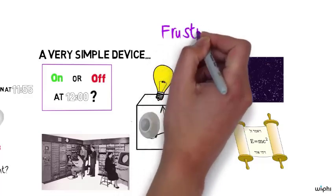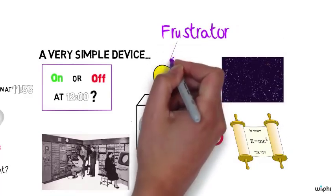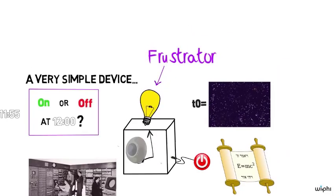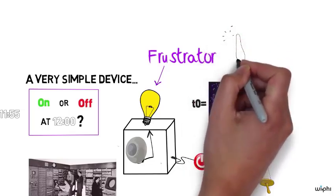Now it doesn't seem so easy to win the competition because what this machine is, is a frustrator. It's designed to frustrate whatever prediction you make. It's designed to make it go false.